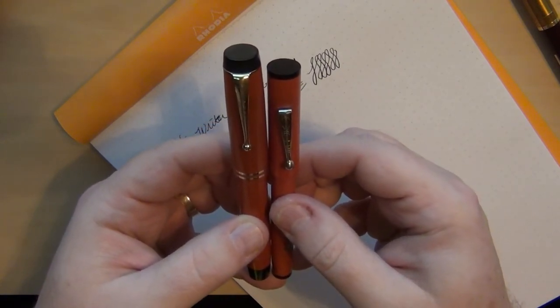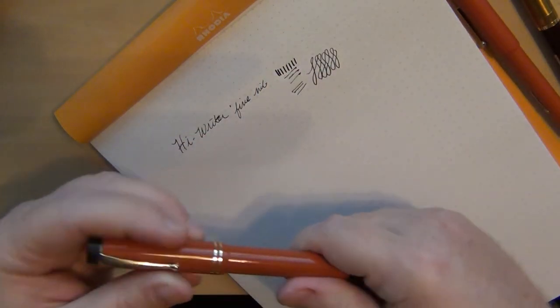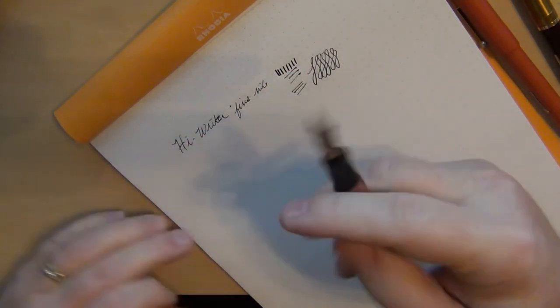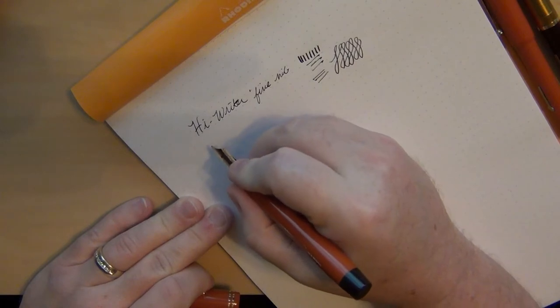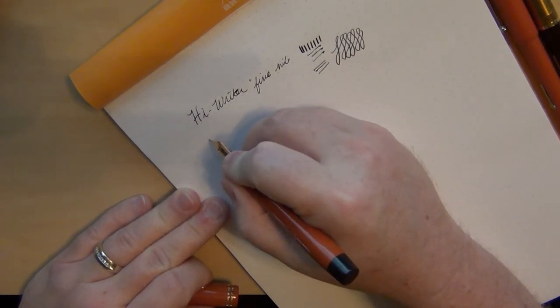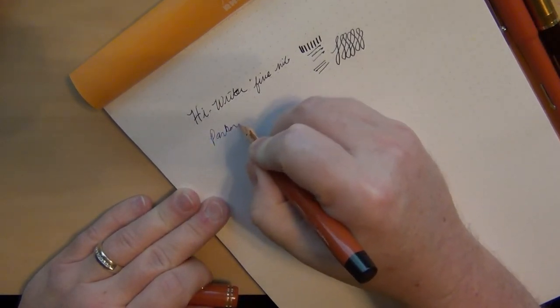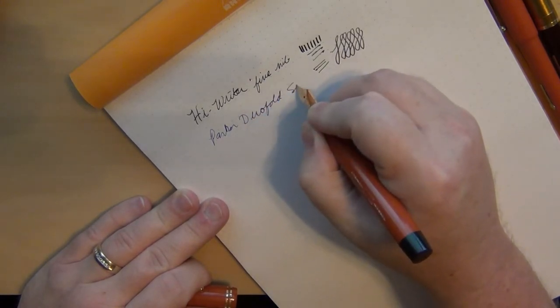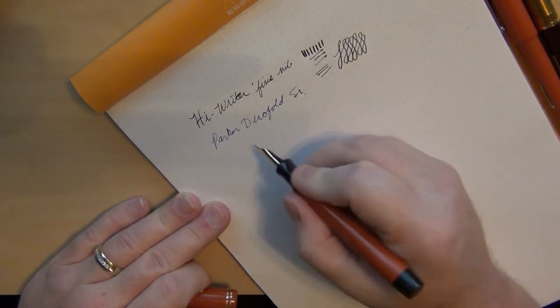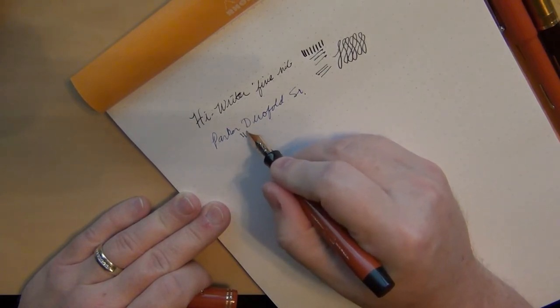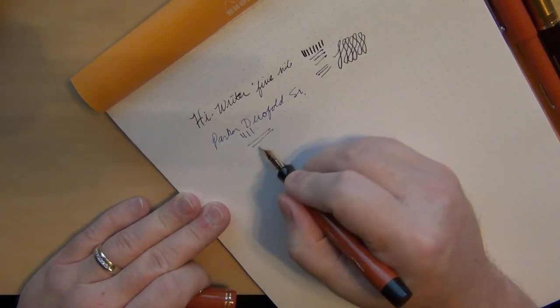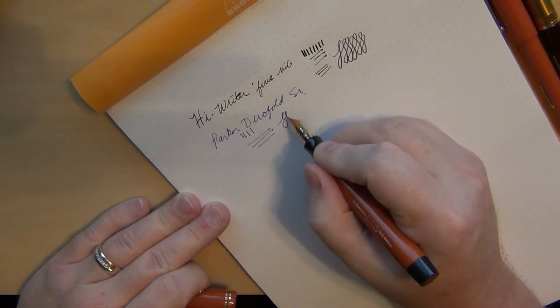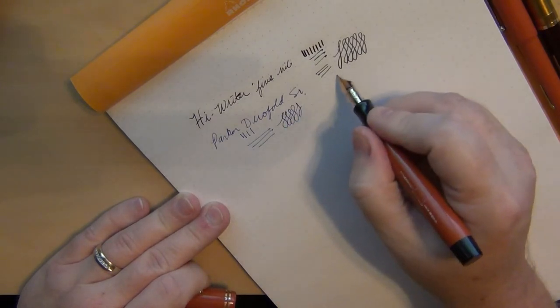You can see definitely that the Duofold senior is definitely bigger. Just for grins let's see how well this writes by comparison. And I would expect, yeah it does write a lot better. This still has a fine nib, a rigid nib, but still is a lot smoother than this.